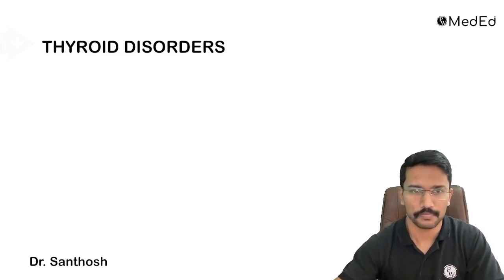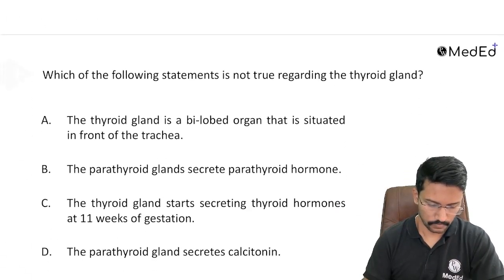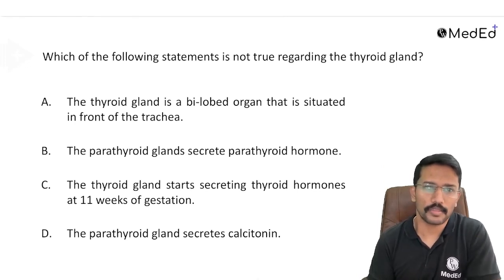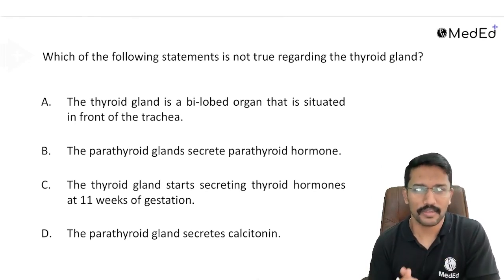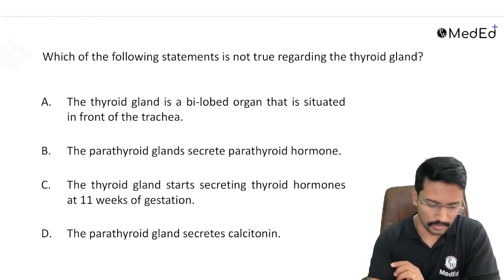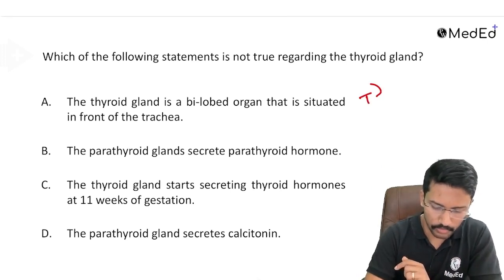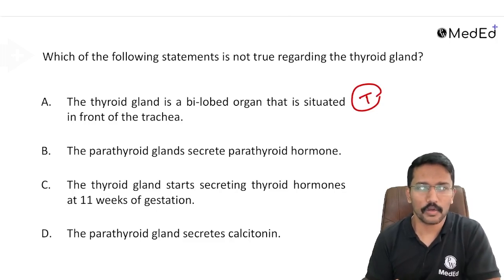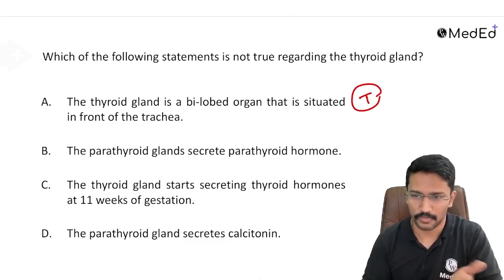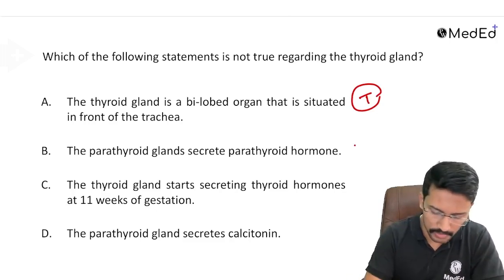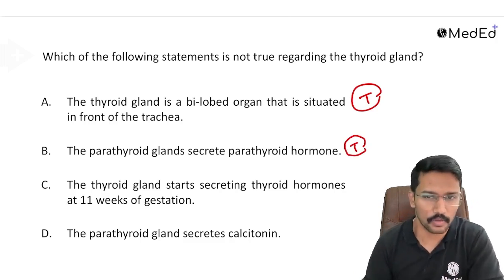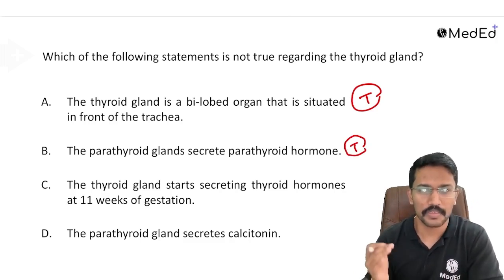Thyroid disorders. The question asks what is not true regarding the thyroid gland. The thyroid gland is a bilobed organ situated in front of the trachea — that is true. The parathyroid glands secrete parathyroid hormone — that is also a true statement. The name parathyroid gland comes from the fact that it secretes parathyroid hormone, which is concerned with the regulation of serum calcium levels.